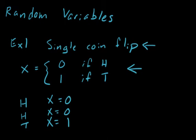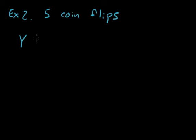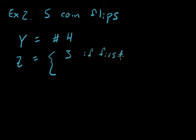For a more complicated example, say the event is 5 coin flips. Here we're going to have a variable y, which is the number of heads, and we'll say z equals 3 if the first flip is tails, and 7 otherwise, if the first flip is heads.